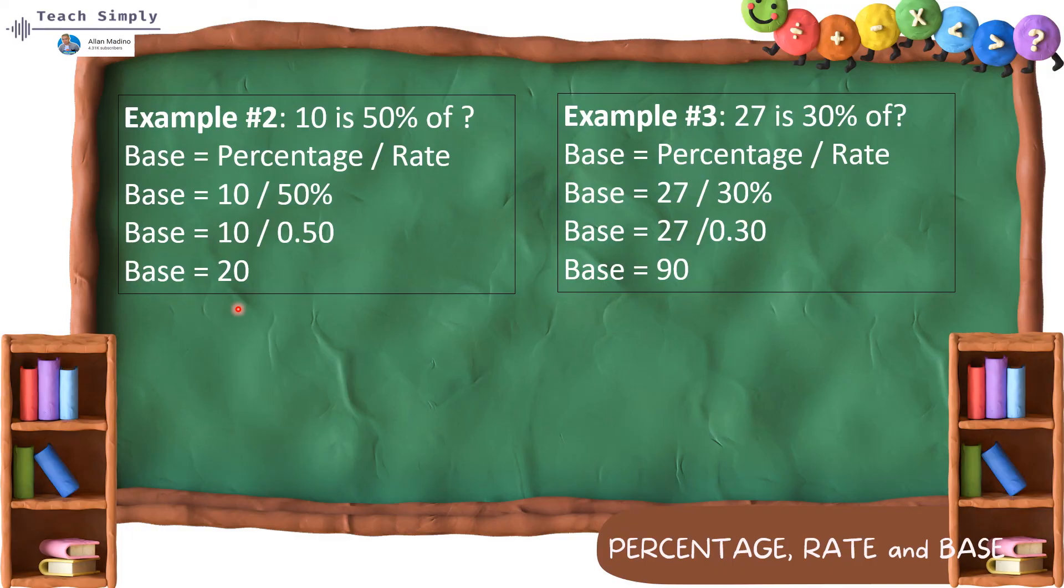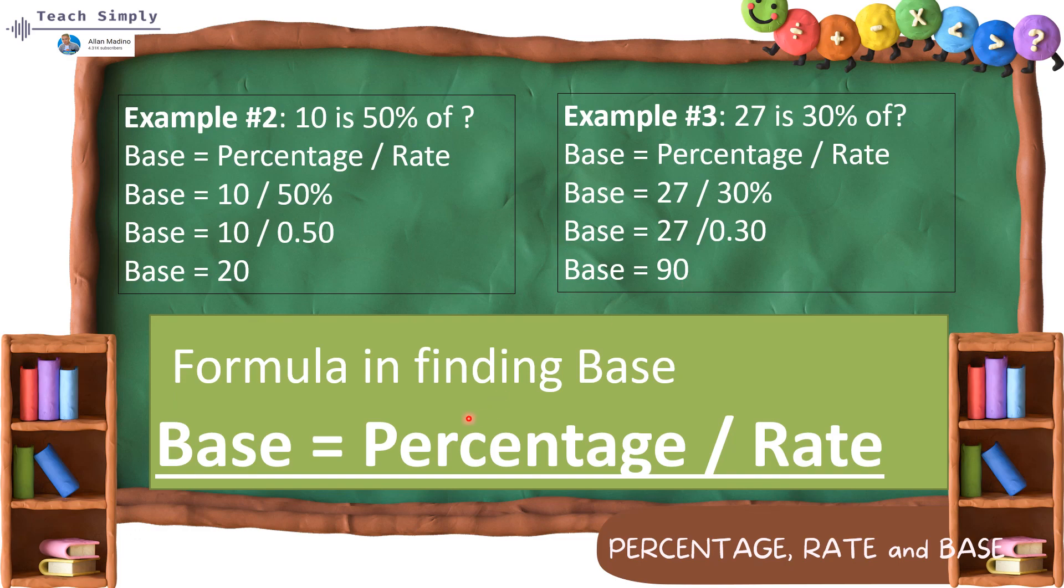So, another example, 27 is 30% of what number? So, base is percentage divided by rate. Base is 27 divided by 30%. Again, let's convert it to decimal. 30% magiging 0.30. So, 27 divided by 0.30 is equals to the base is 90%. Don't forget that in solving or in formula, the formula in finding the base should always be base equals percentage divided by the rate.